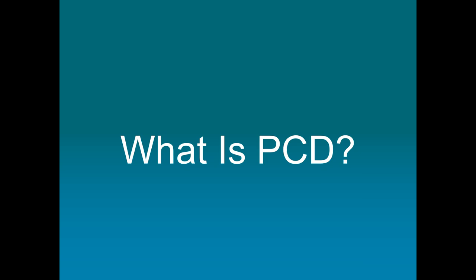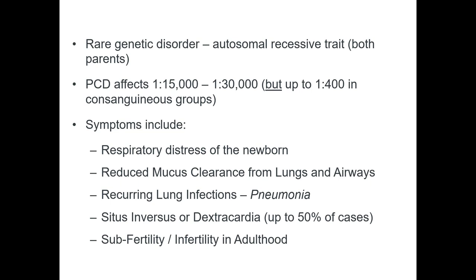PCD is a rare genetic disorder which is an autosomal recessive trait, so both parents need to be carriers of the genes for PCD. It can affect one in 15,000 to one in 30,000 people, but this can increase to up to one in 400 in consanguineous groups. In patients with PCD, the cilia don't work properly, which can cause a buildup of mucus leading to swelling and infection in the lungs and ears. Symptoms include respiratory distress of the newborn, reduced mucus clearance from lungs and airways, recurring lung infections, situs inversus or dextrocardia — where the organs are all on the opposite side of the body — and subfertility and infertility in adulthood.